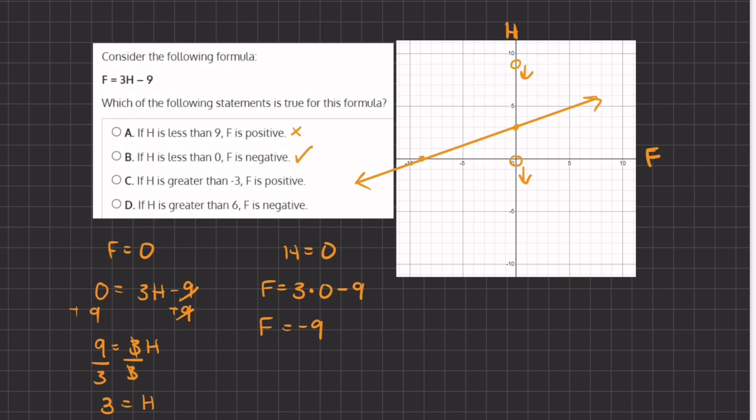Now let's see why C and D are incorrect. If h is greater than negative three, so h is greater than negative three which is right over here, then f is positive. Well this is incorrect because f is negative until we reach this positive three right here, so all of these values are negative until it reaches the positive three and then all the f values will become positive. So C is incorrect.